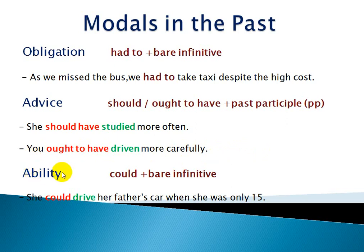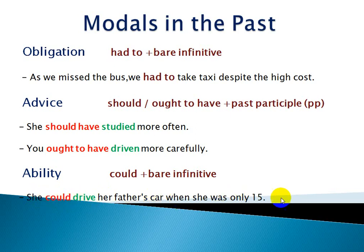Ability can be expressed by 'could' plus bare infinitive. Example: 'She could drive her father's car when she was only 15,' which means she was able to, she was capable of driving her father's car when she was only 15. So past ability can be expressed by 'could' plus infinitive without 'to.'